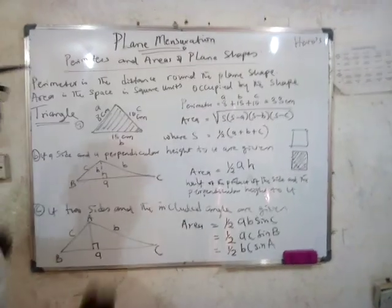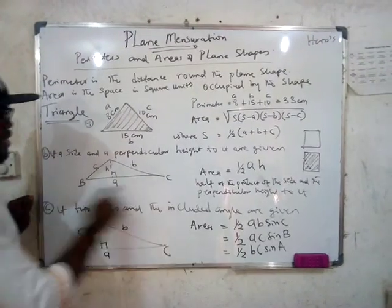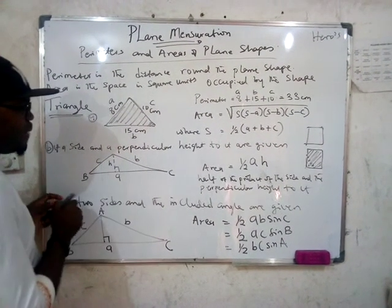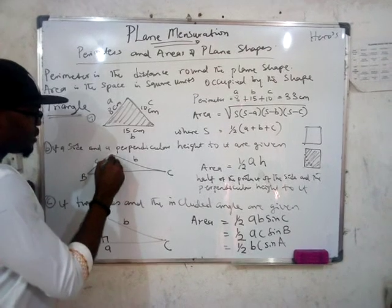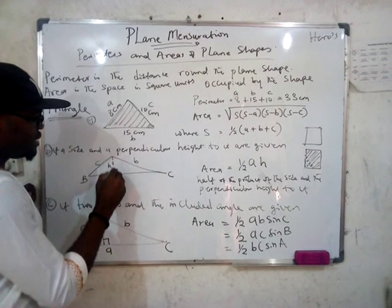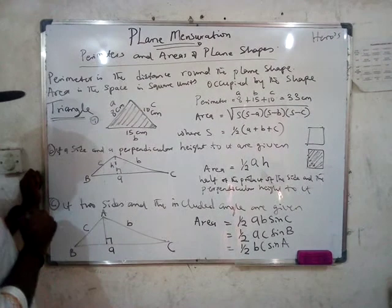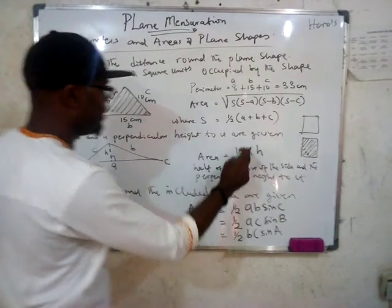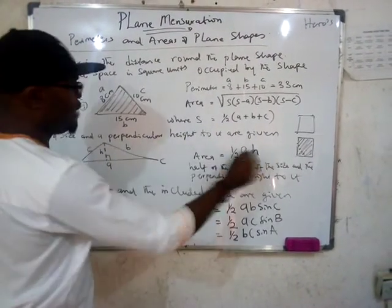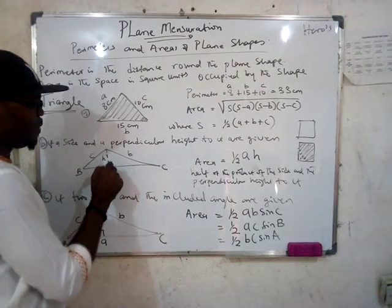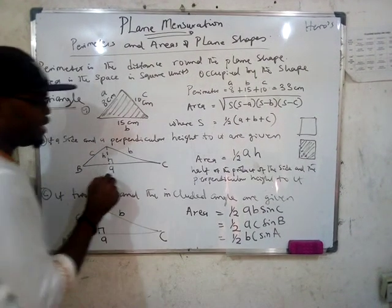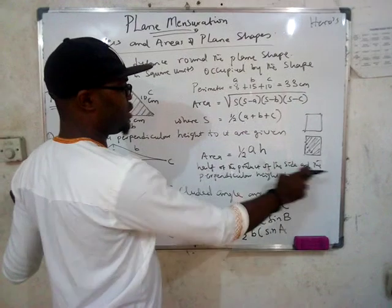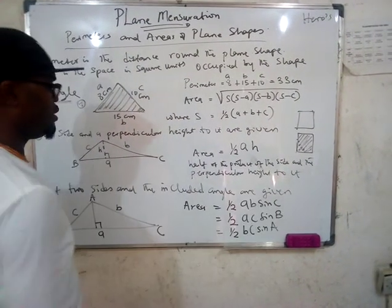But now, when you are given one side — say a — and you are also given a perpendicular height on that side, you are going to use the formula: area is equal to half the side given times the perpendicular height to it. So you say half of the product of the side and the perpendicular height to it.